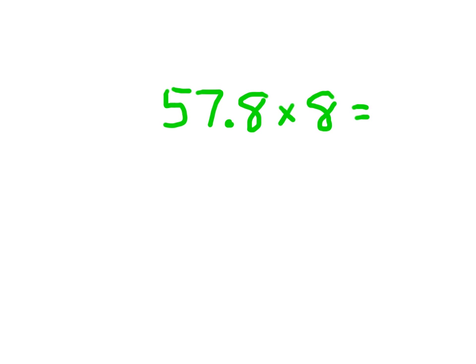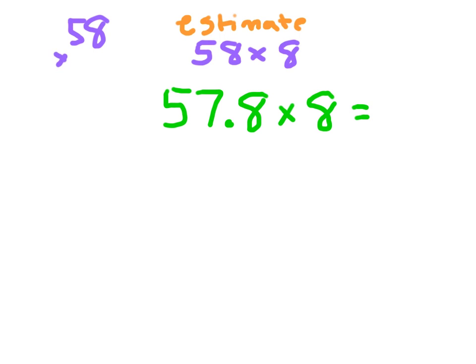One of the things that might help us when we're multiplying with decimals is to really think about what the answer should be — an estimated answer. If we're estimating this product, we're going to take 57 and 8 tenths, round it to the nearest whole number, and still multiply it with the 8. We keep the other factor the same. So 58 times 8: 8 times 8 is 64, write 4 and regroup the 6; 8 times 5 is 40, plus 6 is 46. So my answer should be around 464. This will help us in placing the decimal point.